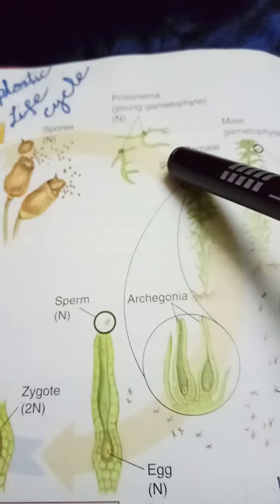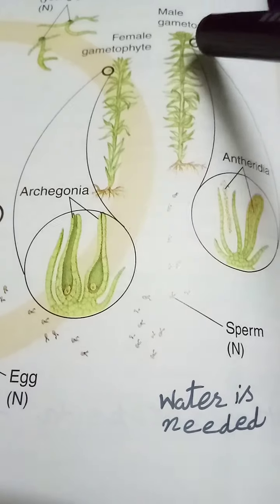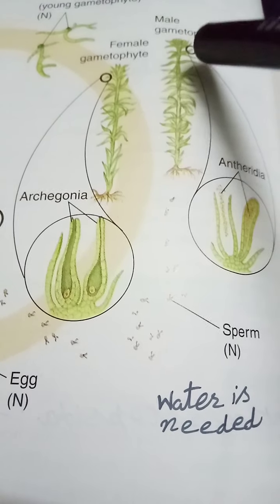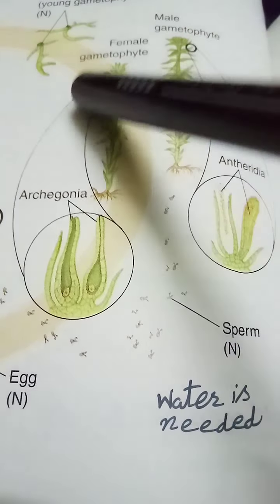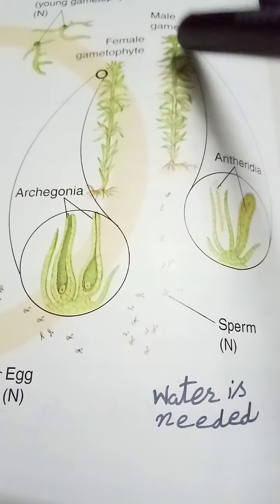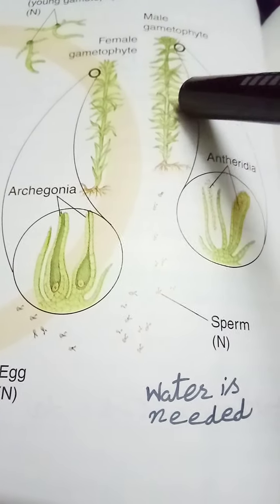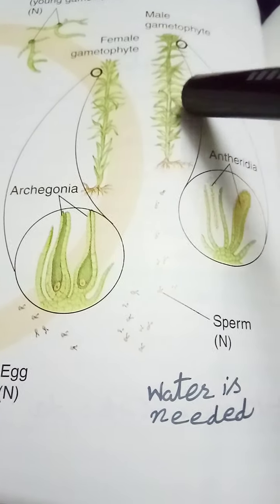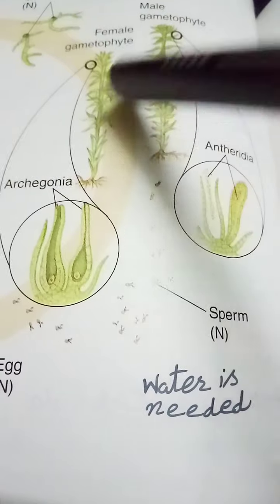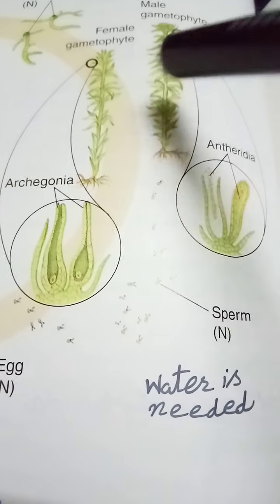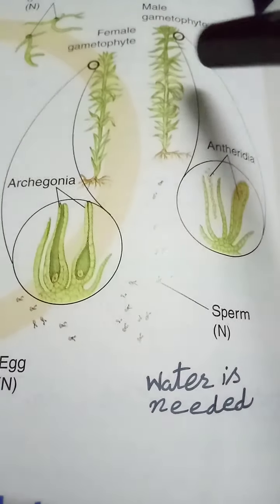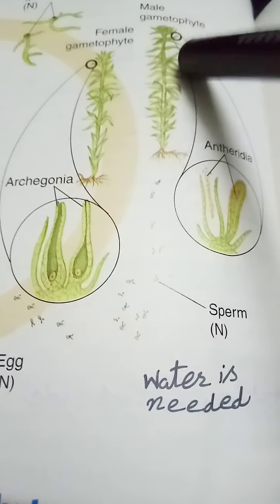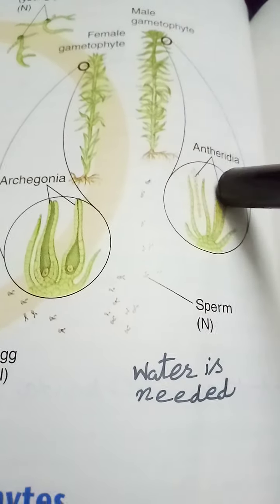As the protonema grows, it forms rhizoids that grow into the ground, and above ground it develops into a leaf- or stem-like structure known as the gametophyte. Male or female sex organs develop at the tips of the gametophyte. If both male and female gametophytes are present on the same plant, it is known as monoecious; if they are on separate plants, it is known as dioecious.